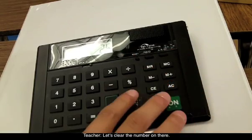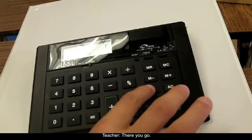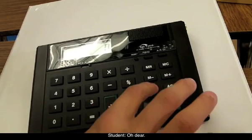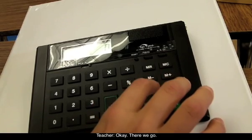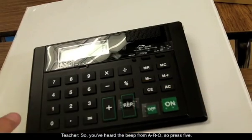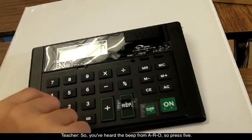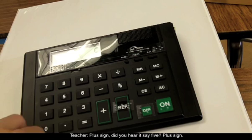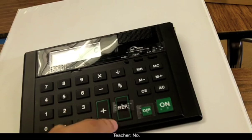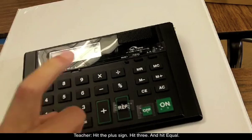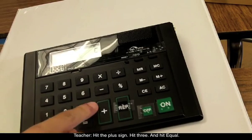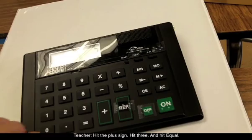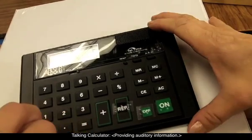Let's clear the number on there. So you heard the beep from the A-R-O. Press five, plus sign. Did you hear it? Did it say five? No. Hit the plus sign. Hit three and hit equal.